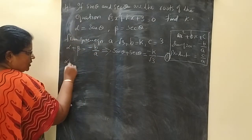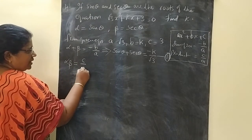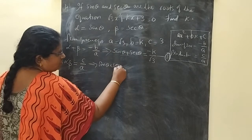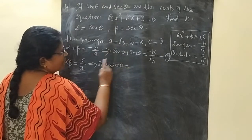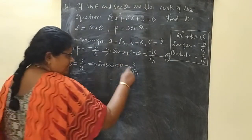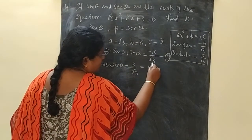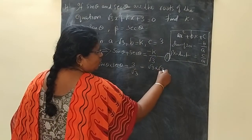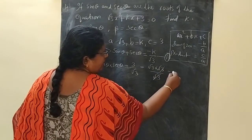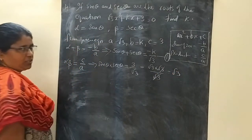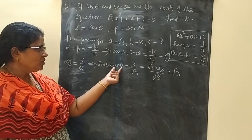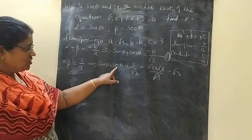And the product of zeros: α × β = c/a, so sin θ × sec θ = 3/√3. Now 3/√3 = (√3 × √3)/√3 = √3. So the product of zeros gives us sin θ × sec θ = √3.